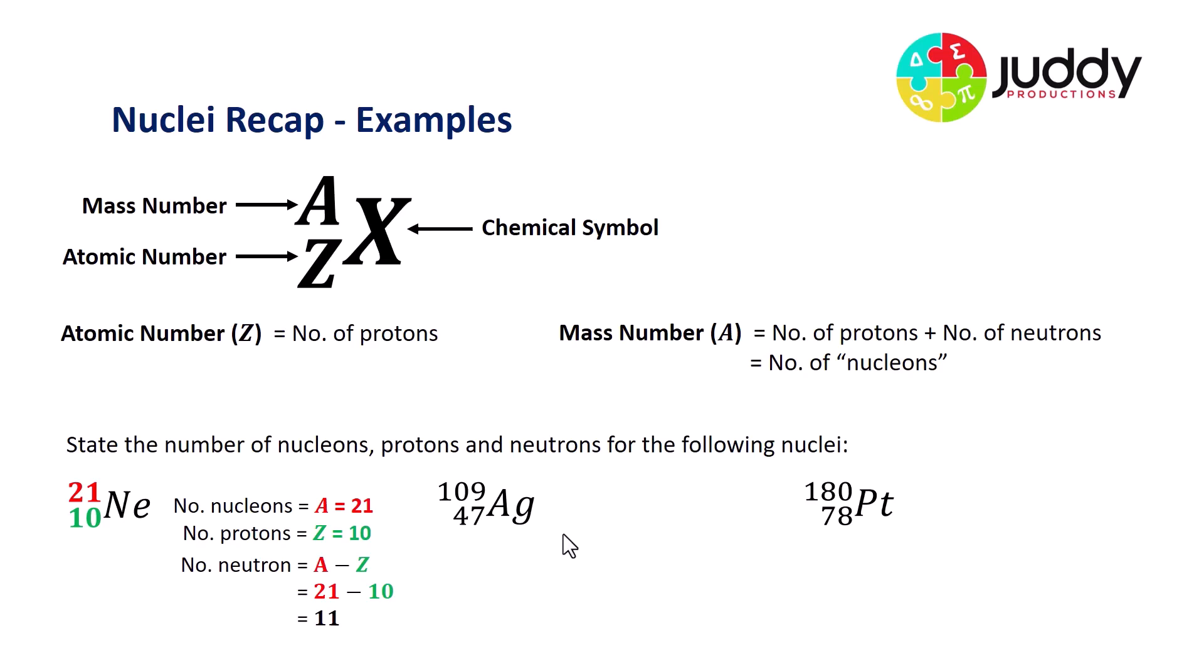Let's repeat this process for our silver sample. So the number of nucleons is again the mass number. That represents 109 in this particular isotope. The number of protons is the atomic number Z, and that represents number 47, as shown in green. And the number of neutrons is the difference between the mass number and the atomic number. So it's 109 take away 47. In this particular isotope of silver, we have 62 neutrons.